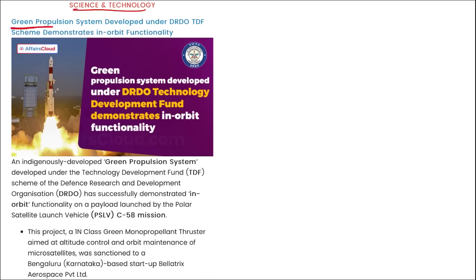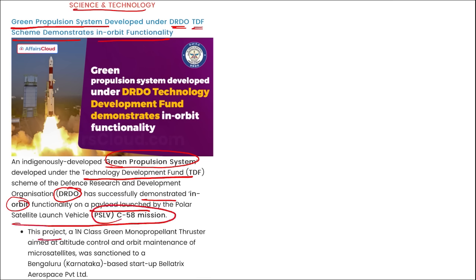Science and technology: an indigenously developed green propulsion system, developed under the TDF — Technology Development Fund scheme of DRDO — has successfully demonstrated in-orbit functionality of a payload launched by the PSLV C-58 mission. The Project A1N class green monopropellant thruster, aimed at altitude control and orbit maintenance of microsatellites, was sanctioned to Bangalore, Karnataka-based startup Bellatrix Aerospace Private Limited.